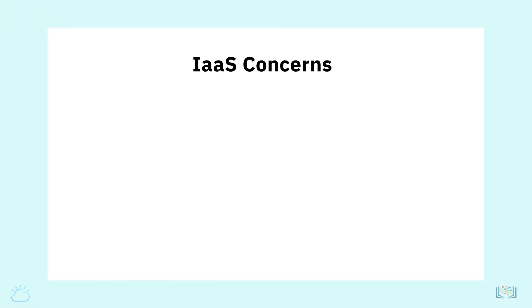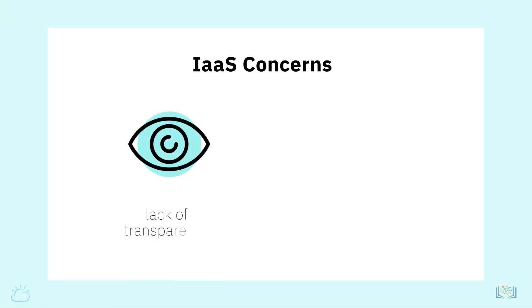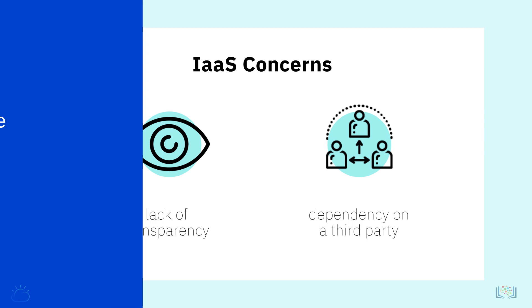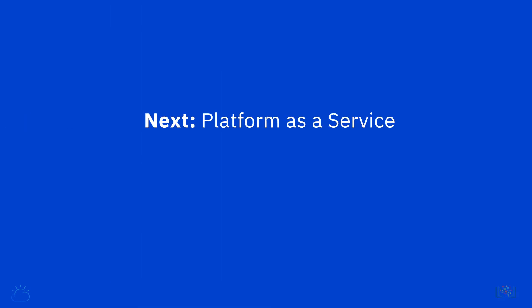While there are some concerns regarding the lack of transparency in the cloud infrastructure's configuration and management, and dependency on a third party for workload availability and performance, infrastructure-as-a-service is the fastest-growing cloud model today. In the next video, we will look at the platform-as-a-service model, its features, benefits, and some use cases.